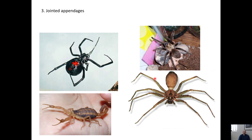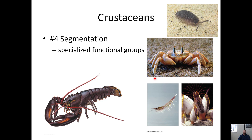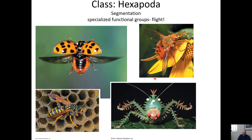Looking at major groups of arthropods: arachnids are one group; crustaceans include shrimp, lobsters, and sow bugs. Segmentation also enabled the evolution of flight in Class Hexapoda — Kingdom Animalia, Phylum Arthropoda, Class Hexapoda, sometimes called Class Insecta. These are the insects, the most abundant group of arthropods, with specialized segments allowing the development of wings. There's an entire course dedicated to this group called entomology.